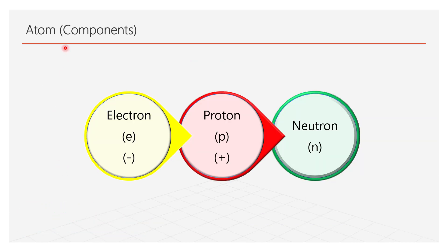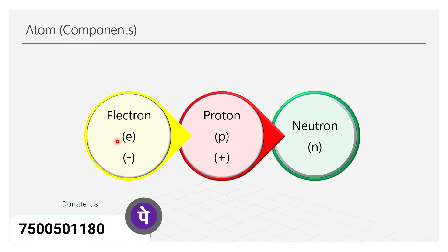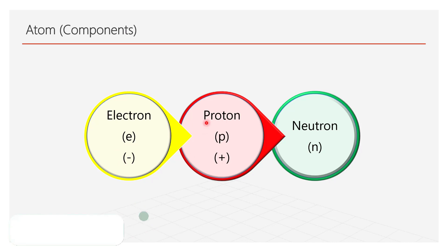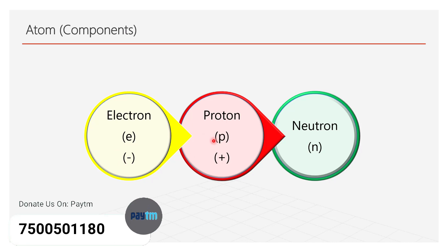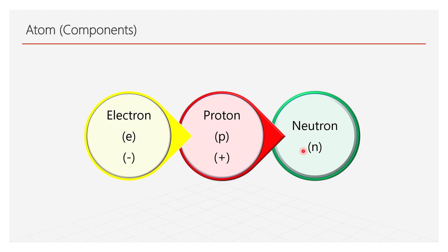Now we will discuss about parts of an atom. There are three main parts of an atom: electrons, represented by E, which contain negative charge; protons, represented by P, which contain positive charge; and neutrons, represented by N, which contain no charge.